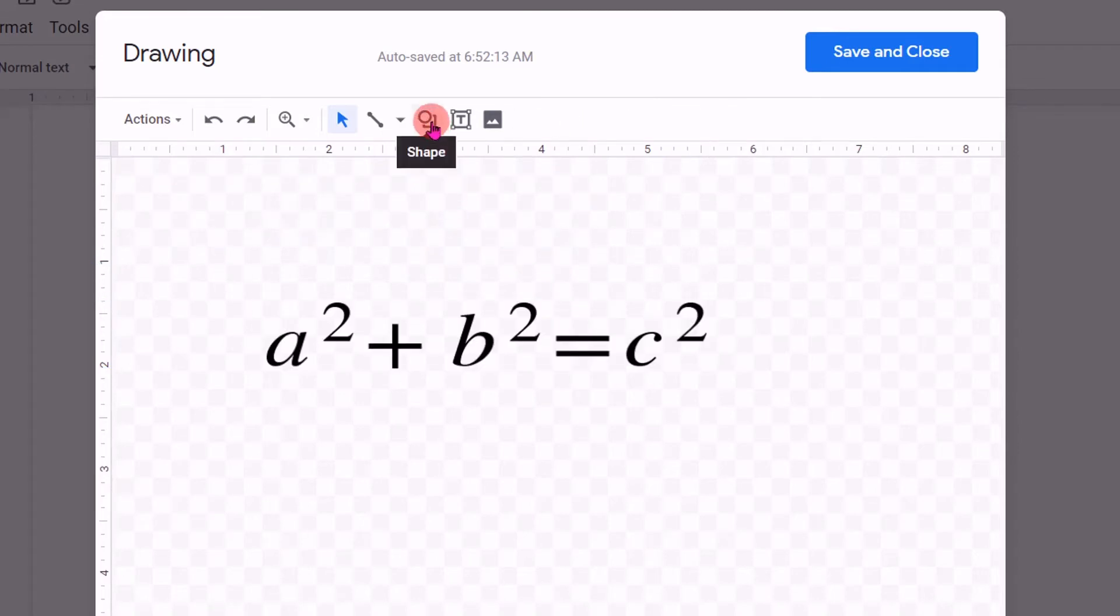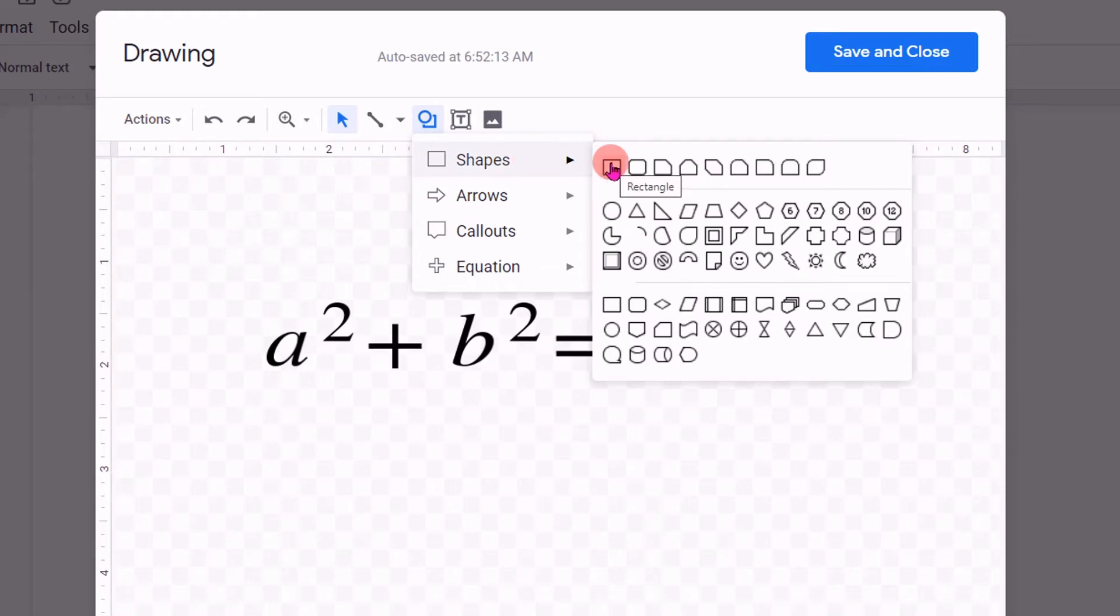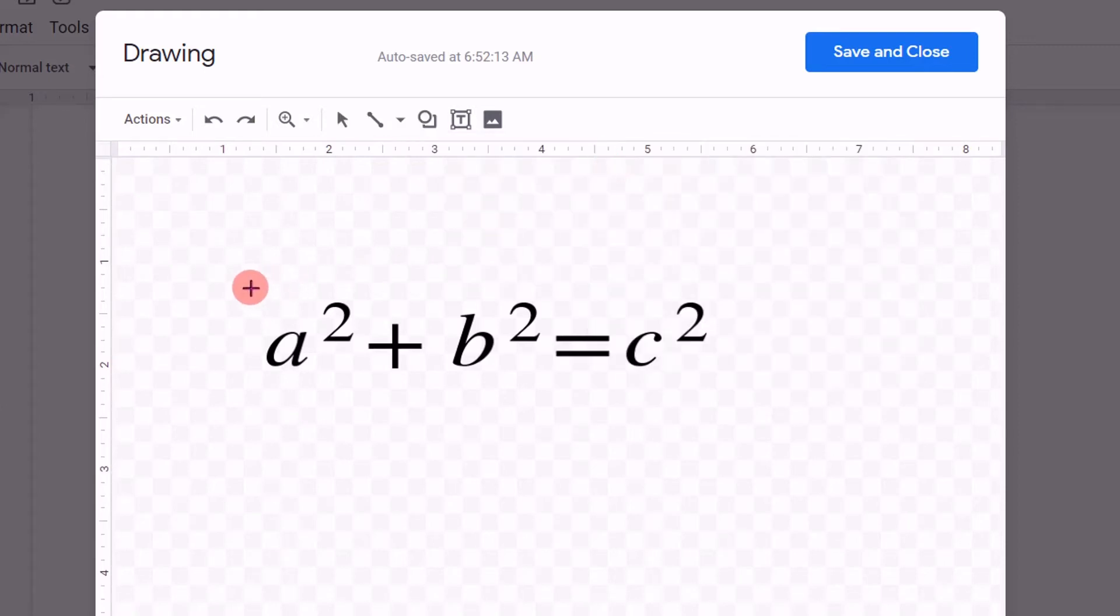Here, you will see an option shapes. Click on shapes and under the shapes select rectangle, draw a rectangle on the equation.